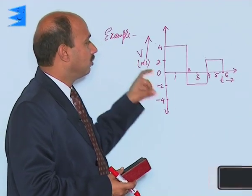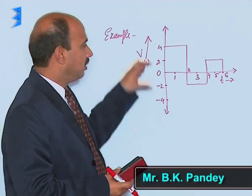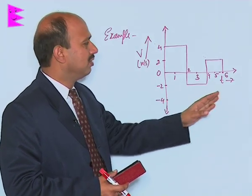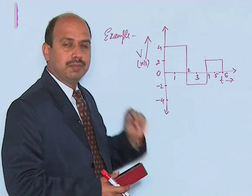Now see this example is of velocity time graph. Here in this axis I have taken velocity, in this axis I have taken time. Time is in seconds, velocity is in meter per second.